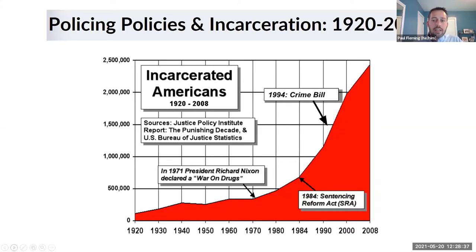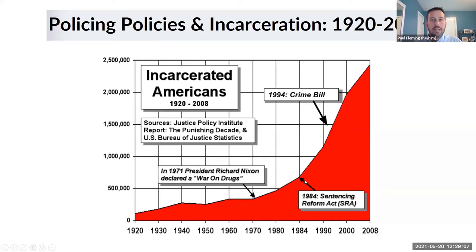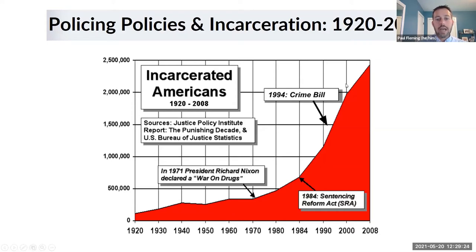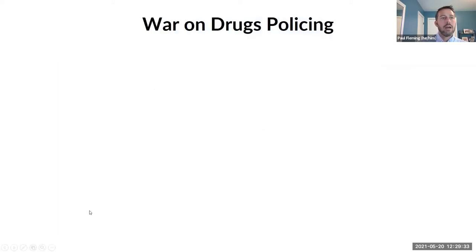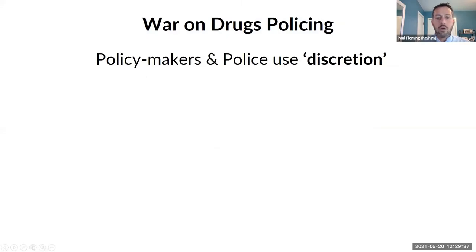This strategy of policing and these policies really led to a striking increase in incarceration. Starting from 1920 with relatively low rates, in 1970 Richard Nixon declared a war on drugs and we see an uptick. Then in the Reagan and Clinton eras, there's a sharp uptick that just continues to rise. The Sentencing Reform Act in 1984 and then the crime bill extended sentences for folks and disproportionately extended sentences for certain offenses, which has led to a lot of the racial disparities we see in incarceration. Our current system of incarceration is not the one we've always had — our society has not always had this system.